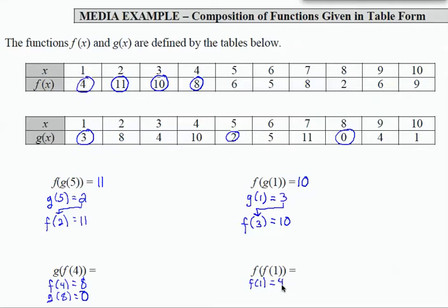Now I'm going to take that 4 and use it as input into function f. So now I'm going to look for the output that goes with an input of 4 in function f. And that is one that we've seen before, which is 8. And so f of f of 1 equals 8.